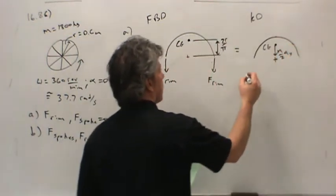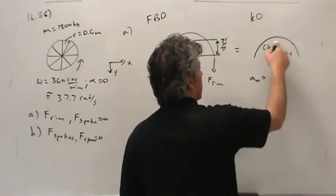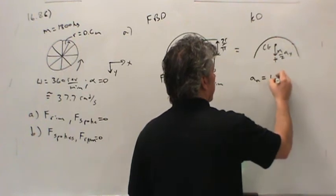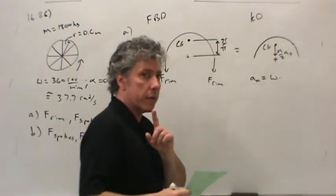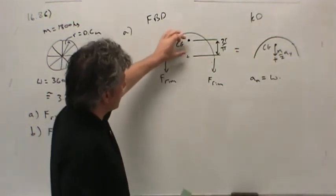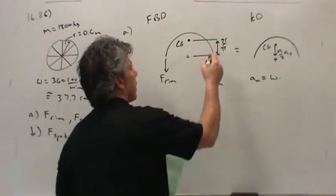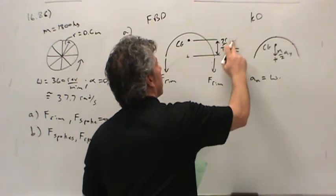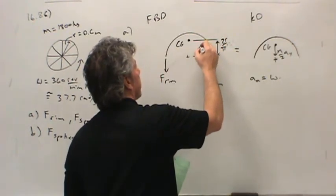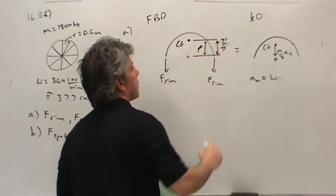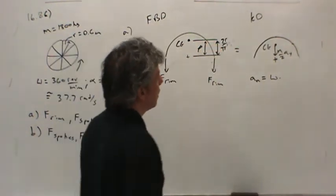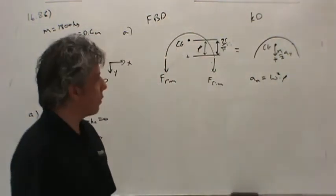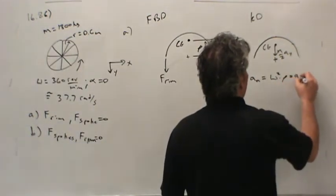And now, the normal acceleration of the center of gravity would be equal to the angular speed squared times R. But R is not this radius. R is the distance from here to here. Well, let me call it ρ instead. So, ω² times ρ would be the normal acceleration, which is just equal to A_Y.